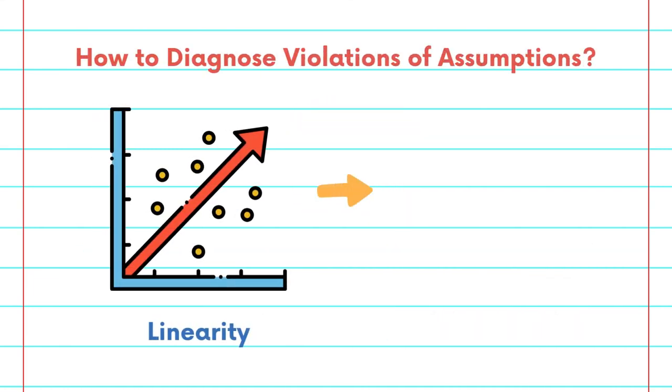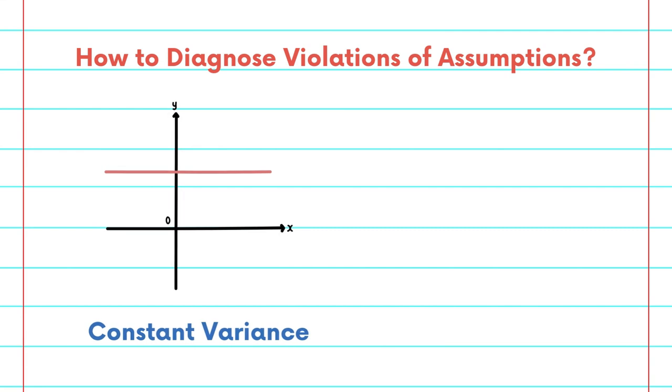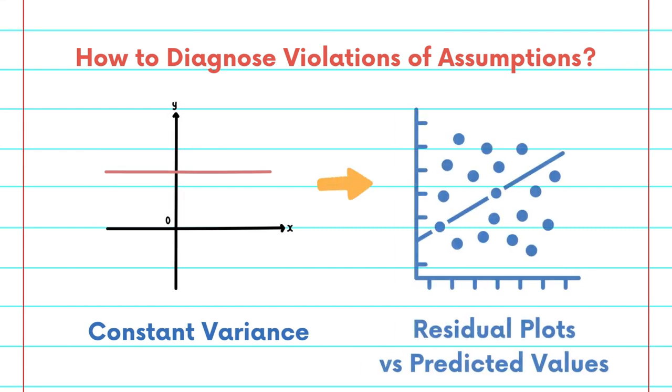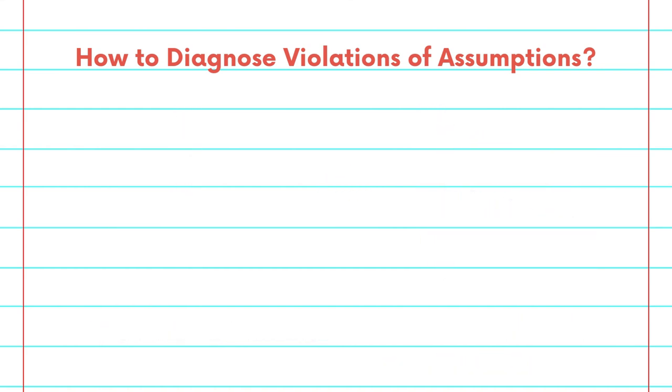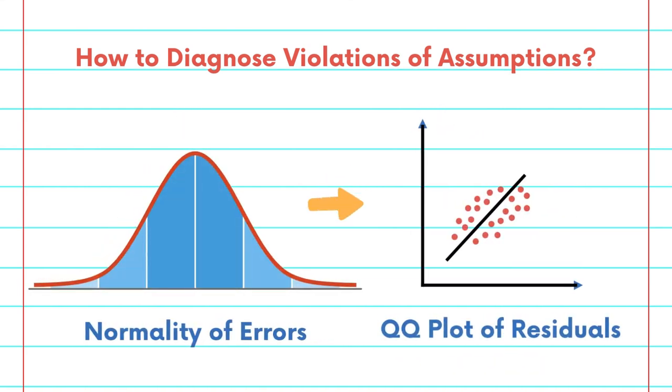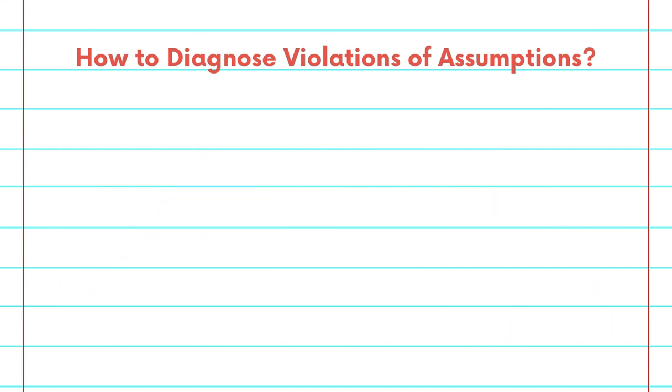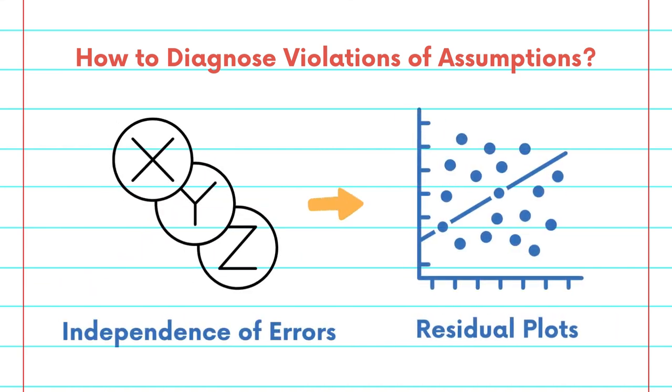For the linearity we can plot the scatter plots of x and y, and for the constant variance, residual plots where residual versus the predicted values can be very helpful. In order to check the normality we can plot the QQ plot of the residuals, and finally for the independence, residual plots can be helpful in this case as well.